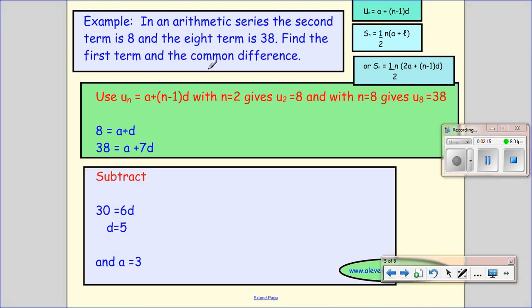In an arithmetic series, the second term is 8, and the eighth term is 38. Find the first term and the common difference.